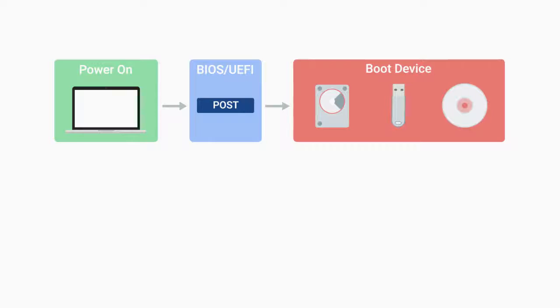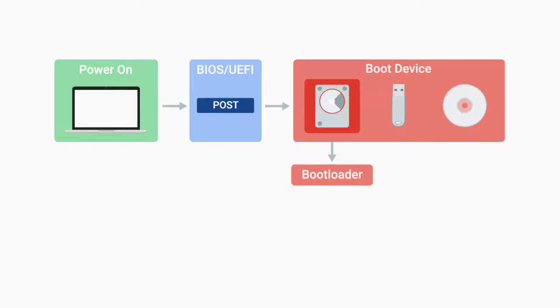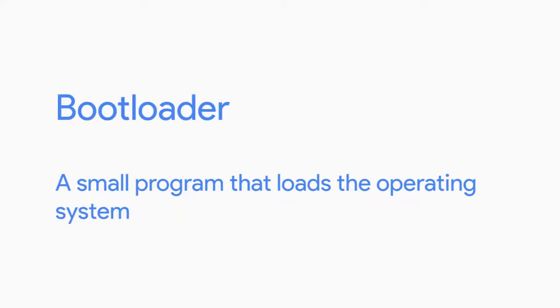Next, depending on the BIOS/UEFI configuration, a boot device will be selected. Devices attached to our system, like hard drives, USB drives, CD drives, etc., are configured in a certain boot order. The devices will be checked in this order, and the computer will search for what's known as a bootloader — a small program that loads the operating system. Once our computer finds a bootloader on a device in the listed order, it'll start to execute this program.